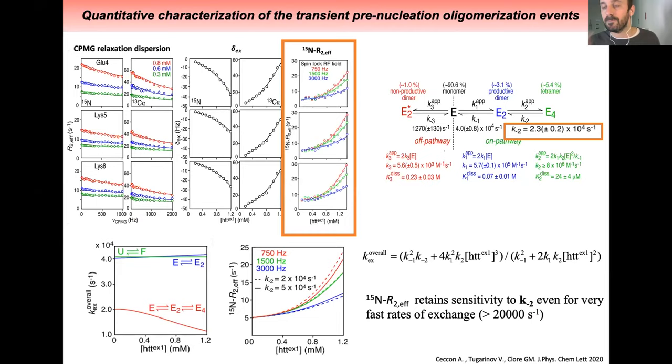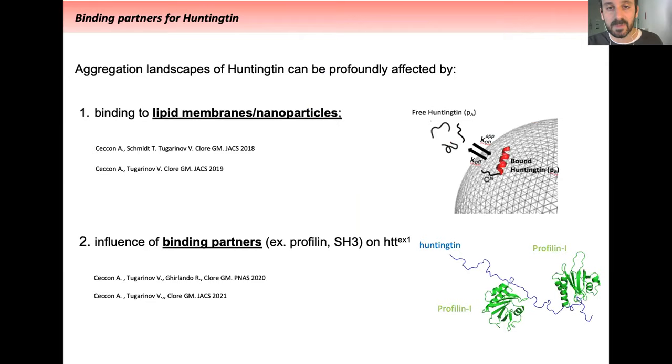The process is extremely fast. We couldn't establish univocally using all those experiments the k-2 rate. From a grid search, we established it was more than 20,000 per second. We complemented our experiments with R1rho experiments. This process has a unique feature: the kx overall from E to E4 drops over the range of concentration, which is very unusual. If you measure R1rho experiments at three different spin-lock fields, we can clearly see a difference and uniquely establish this fast process was around 23,000 per second.